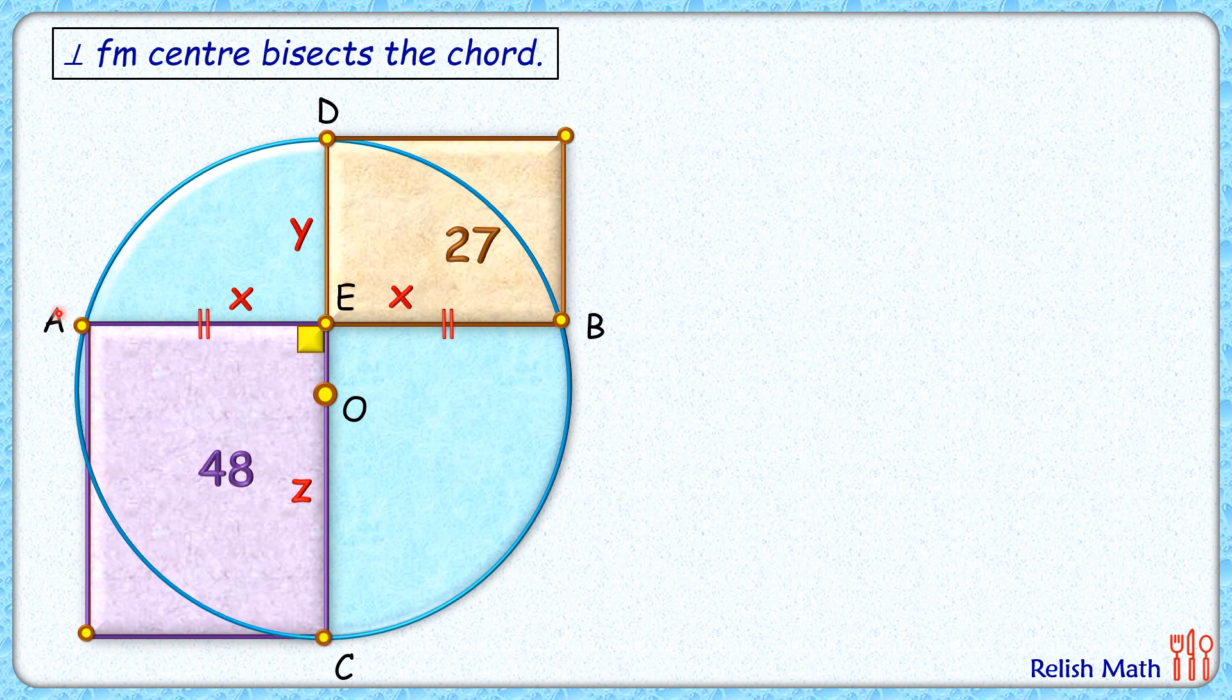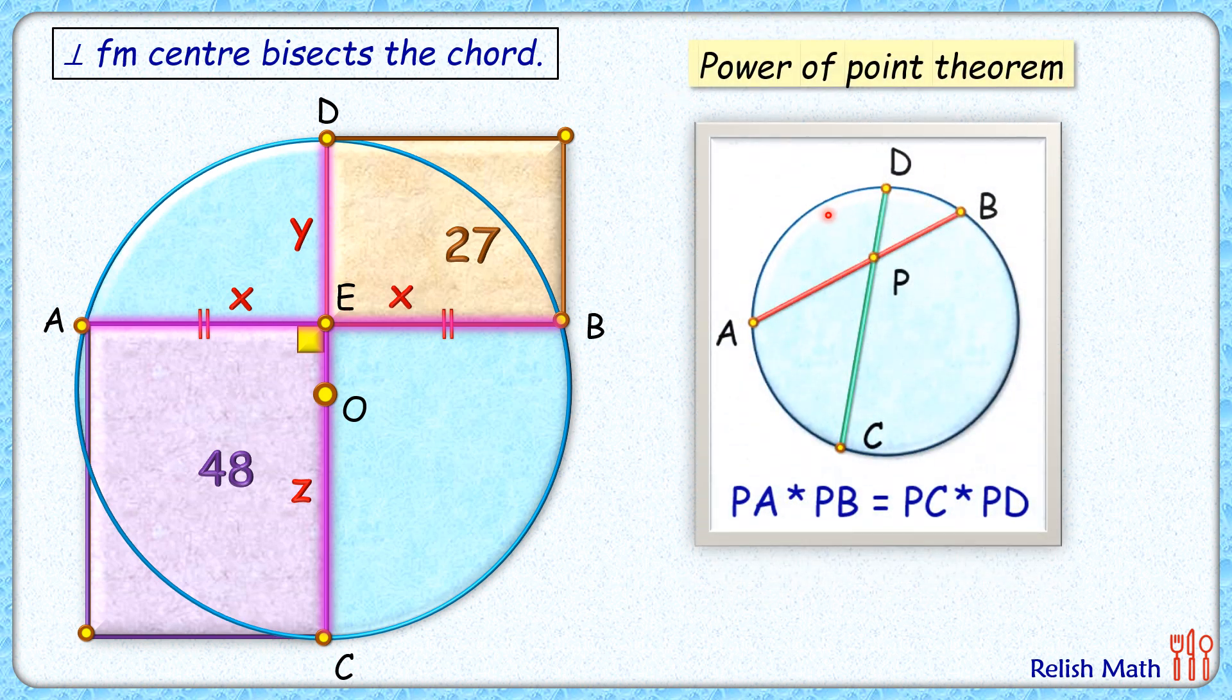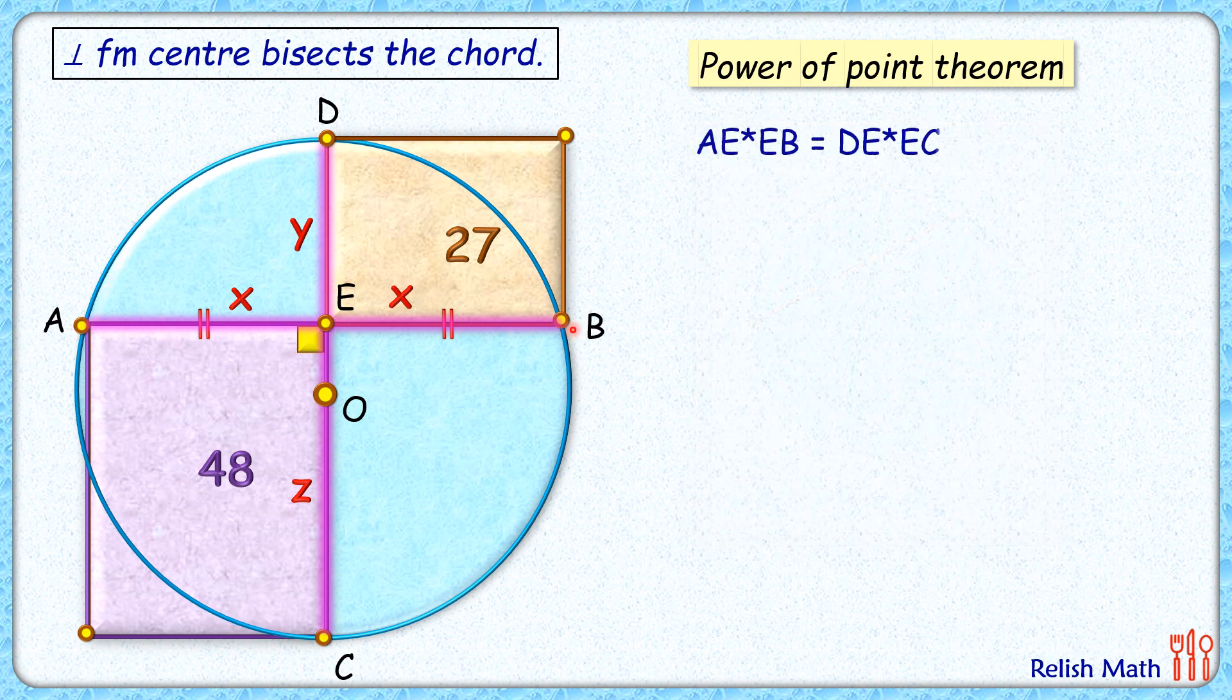Now if you observe, with respect to this circle we have chord AB and chord DC intersecting at point E. By the intersecting chord theorem, or power of point theorem, we know that in a circle when two chords are intersecting each other, they cut each other such that the product of their corresponding lengths is equal. So here AE times EB equals DE times EC.